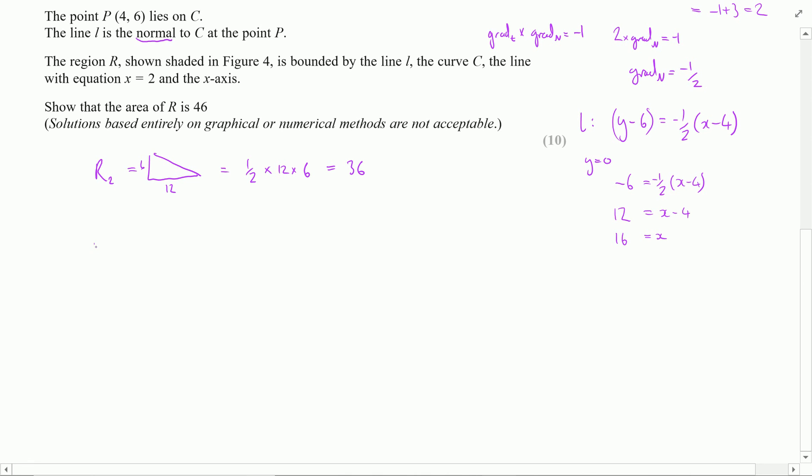So now to find R, I want to add together region 1 and region 2. Region 1 we worked out was 10, region 2 we've established is 36. So what do we get? We get 46 units square. Happy days.